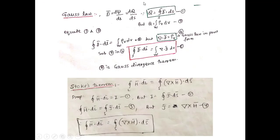Next we will define Gauss's law. We know D bar = dΦ/dS = dQ/dS, therefore Q = ∮ D bar · dS bar. But also Q = ∫ rho-V dV. Equating these two: ∮ D bar · dS bar = ∫ rho-V dV. Also, del · D bar = rho-V, which is called Gauss's law in point or differential form. We have the surface integral of D bar · dS bar equal to the volume integral of divergence of D bar dV.